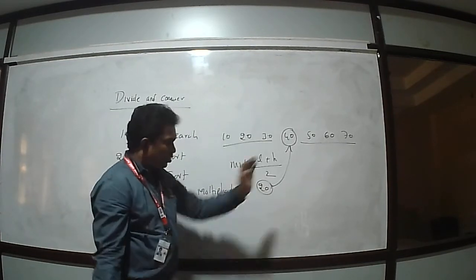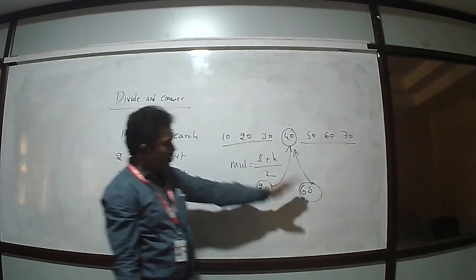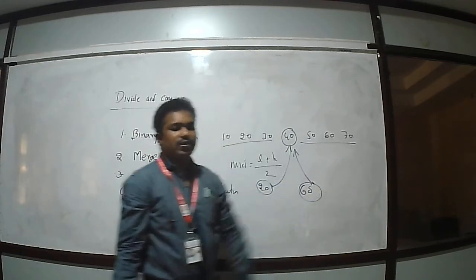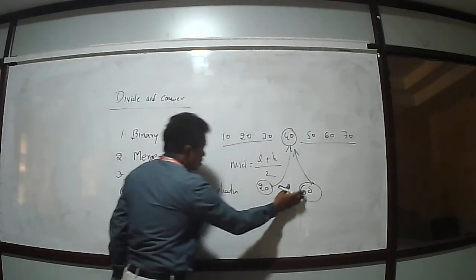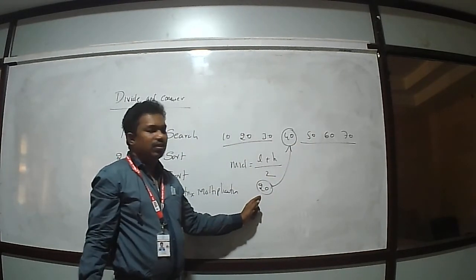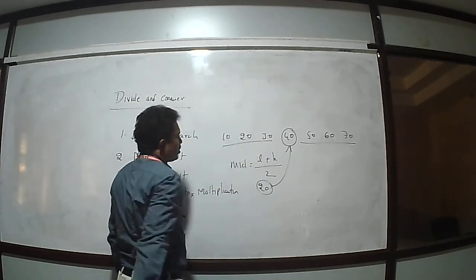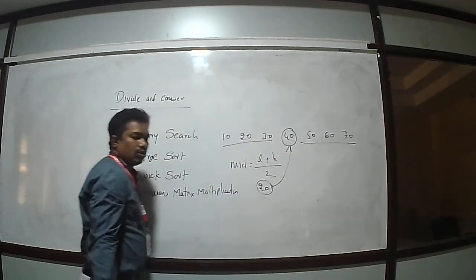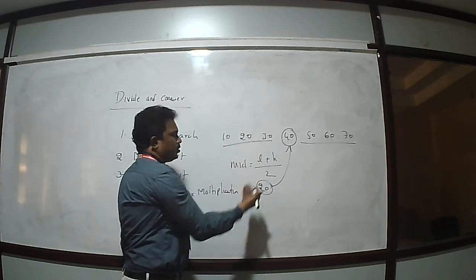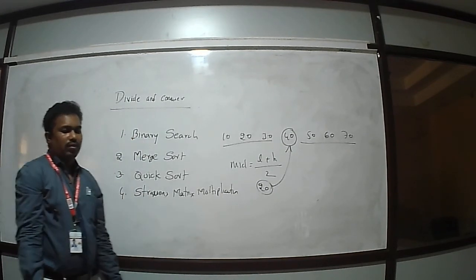For example, if I want to search element 60, it is compared with the middle element 40. Since 60 is greater than 40, the searching process continues in the right side. Coming back to element 20 — it's less than 40, so we search the left part. That sub-list is again divided into 2 parts, and the middle element is 20. Since 20 equals 20, we got the output. In this way, binary search uses the Divide and Conquer approach.